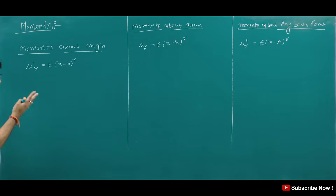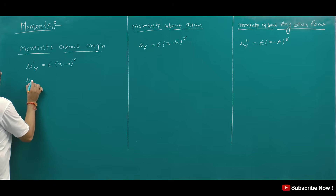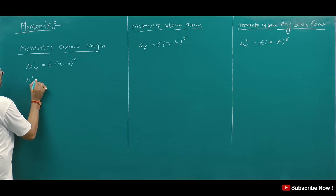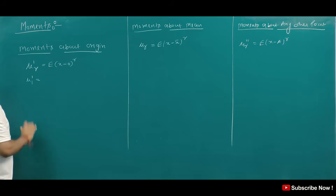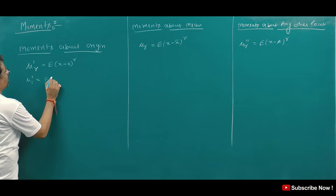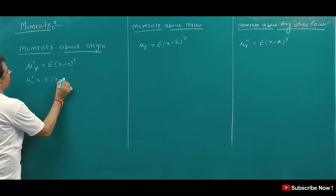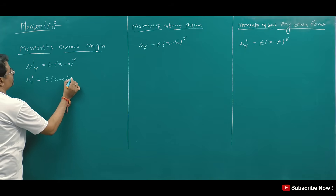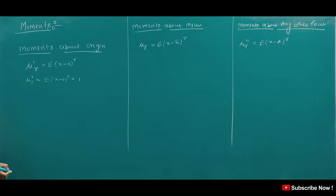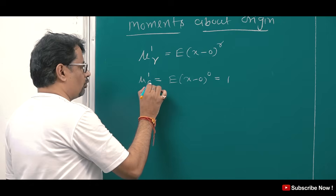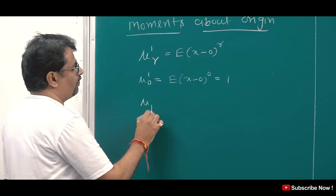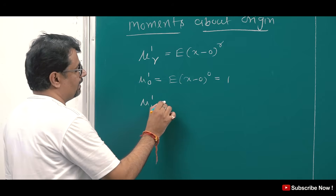I think you will understand this. Now, first of all, let's find the zeroth moment about origin. When r equals 0, the value is 1 — there is not much discussion there. That is the zeroth moment. Now the first moment: when r equals 1, it gives us E(x), which tells us the mean.